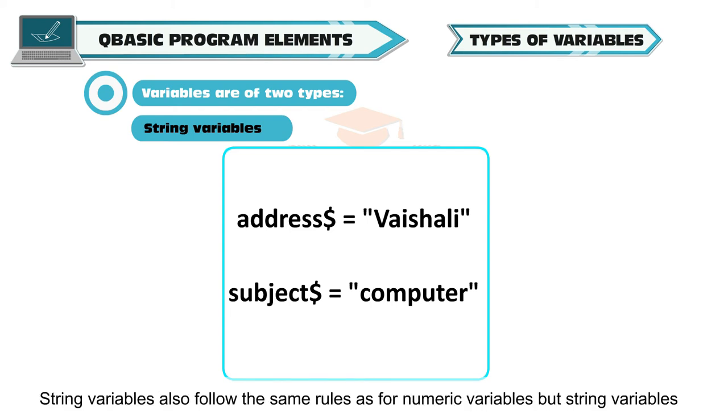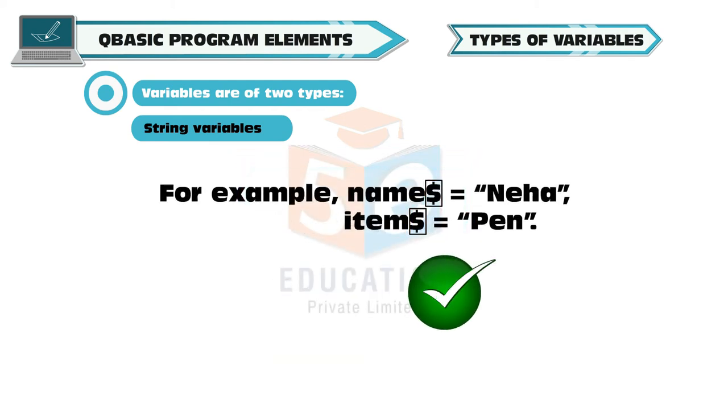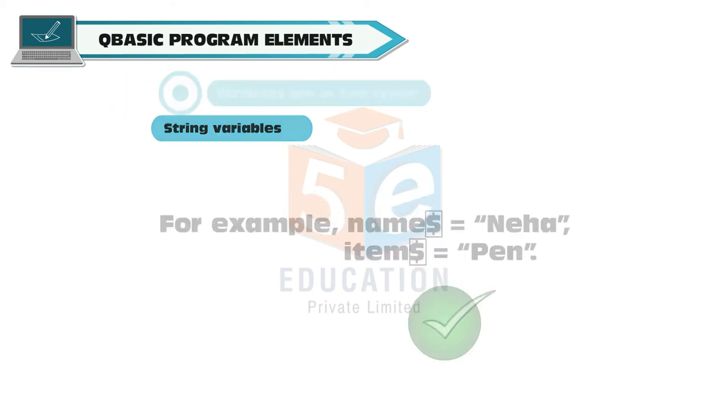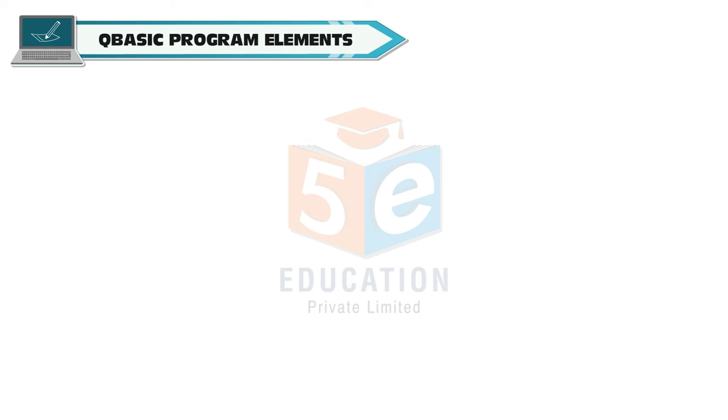String variables: String variables are used to store a string of characters. String variables also follow the same rules as for numeric variables. But, String variables should always end with a dollar sign. For example, Name dollar is equal to Neha in quotes. Item dollar is equal to Pen in quotes.